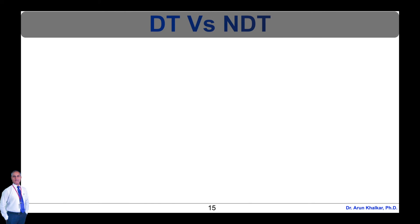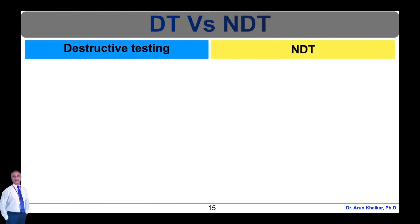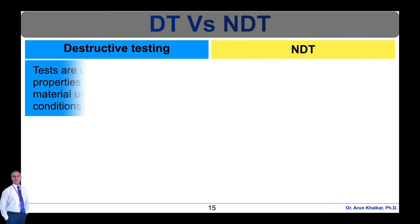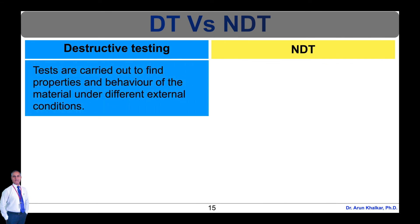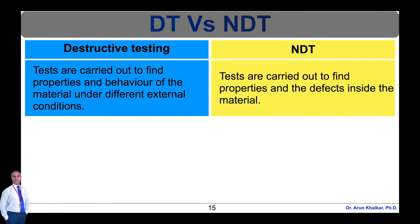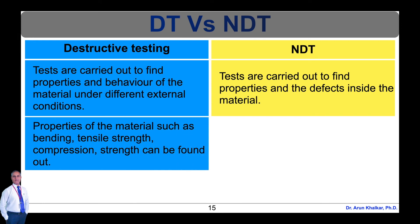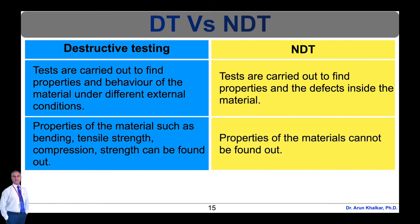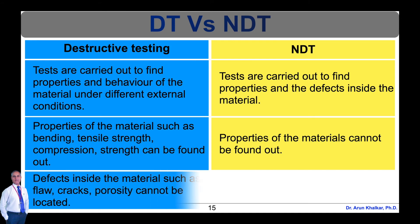Now let's see the difference between destructive testing and non-destructive testing. In destructive testing, tests are carried out to find properties and behavior of the material under different external conditions, whereas in NDT, tests are carried out to find properties and defects inside the material. In destructive testing, properties such as bending, tensile strength, and compression strength can be found out, whereas in NDT, properties of materials cannot be found out.